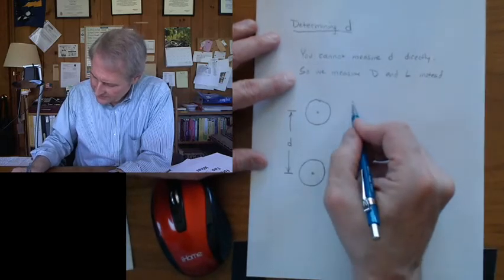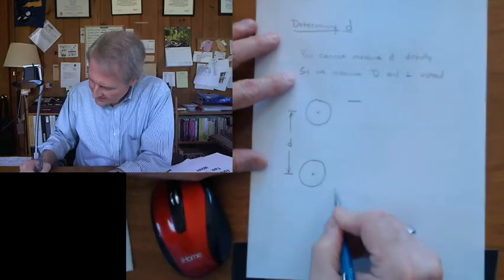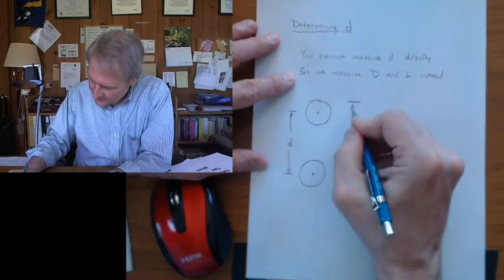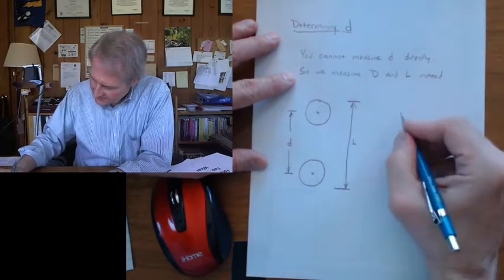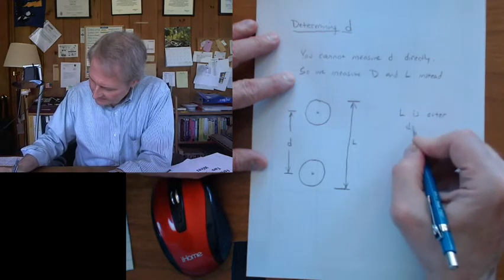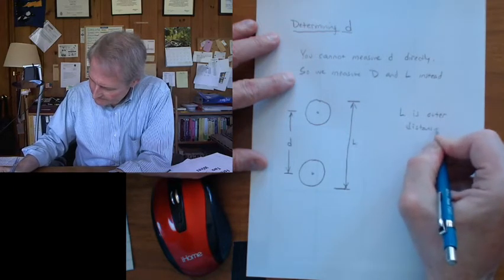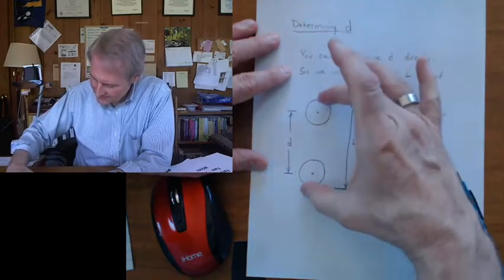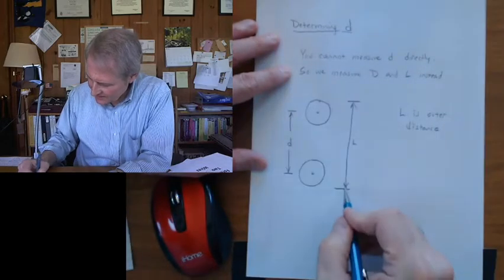But what we can measure is, for one thing we can measure L, which is the outer distance between the wires. I'll show you how to do that in the lab. Okay, L is the outer distance. So we can put a caliper on this and just clamp it on. And when they touch, we've got the distance out.